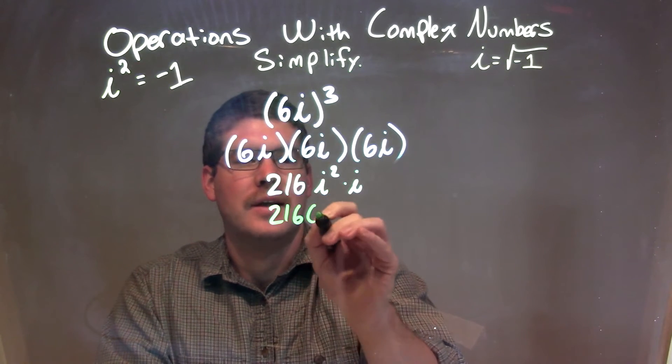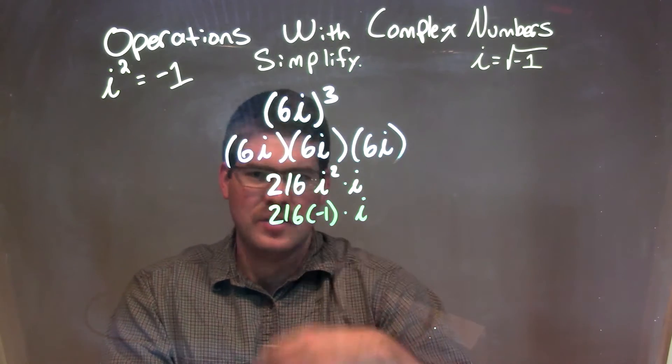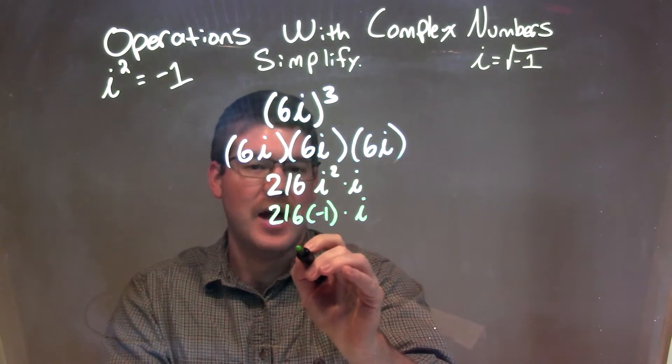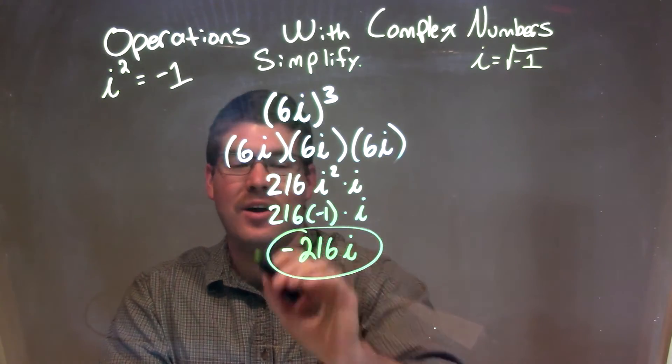So, we have 216 times negative 1 times i. Well, negative 1 times 216 is negative 216, so now we just have negative 216i, and that is our final answer.